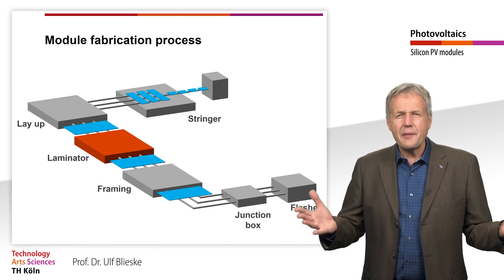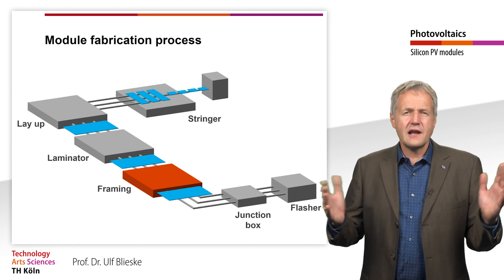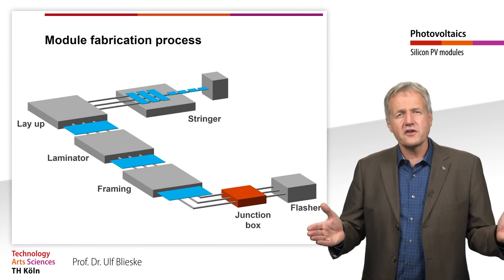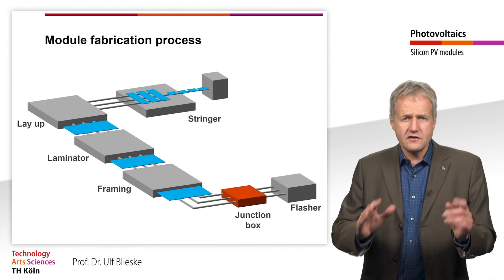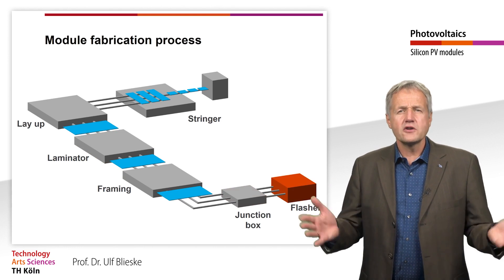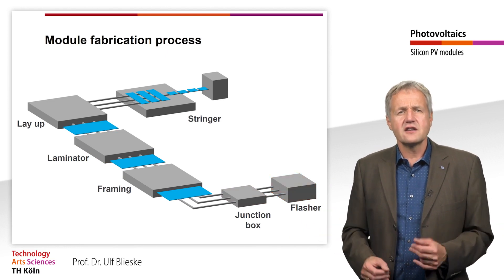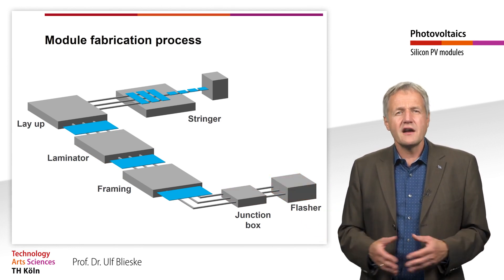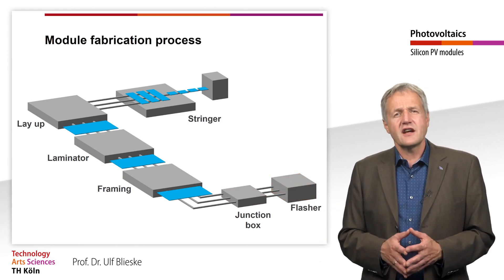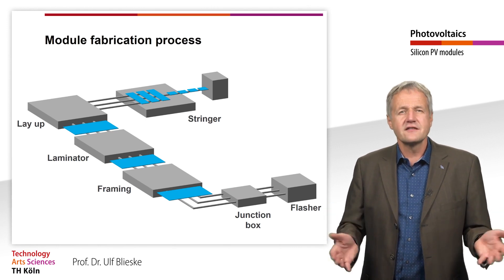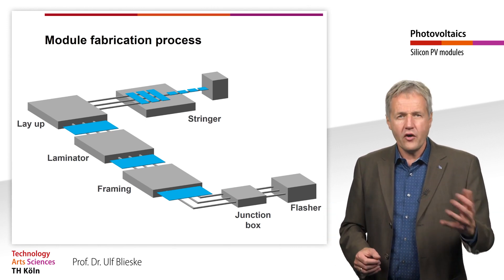After the lamination process, the laminate is framed and the junction box is attached to the module. Finally, the PV module is tested in a flasher, and optionally other tests such as an electroluminescence test are performed.